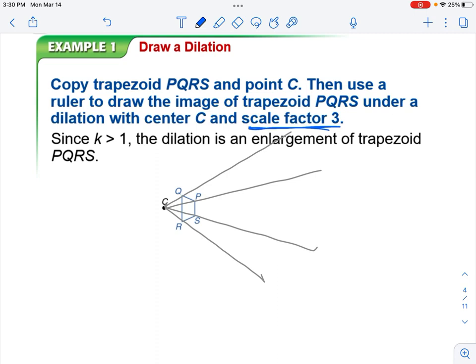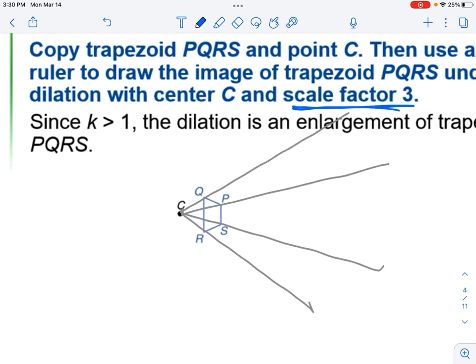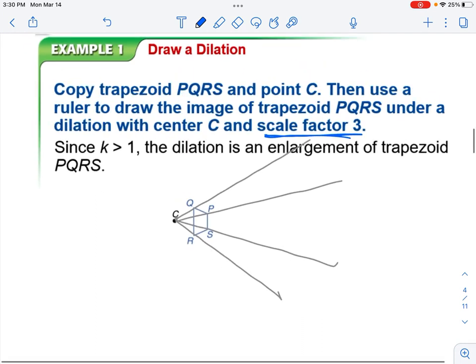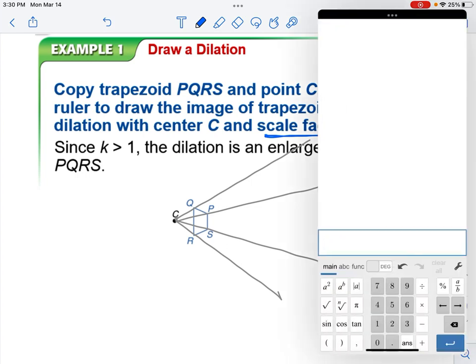So I'm going to go ahead and I'm going to measure C to Q. I'm going to do this in centimeters. And also if you're following along, yours might be different depending on how zoomed in you have your picture. Okay, so mine, the way it is set right now, C to Q is about 0.9 centimeters. So I'm going to take 0.9 times 3.